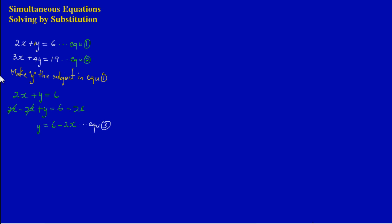Now I'm going to substitute equation 3 — which is y equals 6 minus 2x — into equation 2. Since I've made y the subject in equation 1, wherever y appears in equation 2 I'm going to put 6 minus 2x. Equation 2 states: 3x plus 4y is equal to 19.